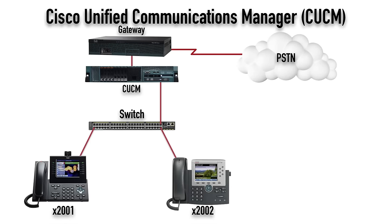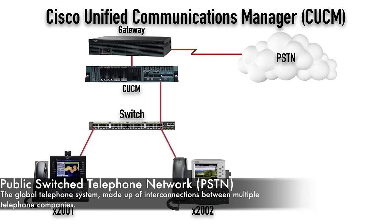Here we've got a couple of Cisco IP phones. The phone in the bottom left is a Cisco 9971, which has a camera built in and can show video on screen. The other phone is a Cisco 7965, which has a color display but no video capabilities. These connect into a switch, which connects into our Communications Manager, which connects into a gateway — often a Cisco router — that gets us out to the PSTN, the public switched telephone network.